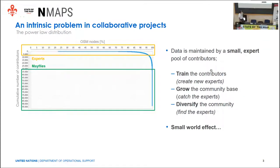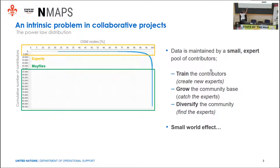We can see that the data is contributed by a small expert pool of contributors. There are different ways to change the skewness of this curve. You can either train contributors — that is the topic of today — to create new experts. What we do by training people is to move people from the green box to the yellow one.